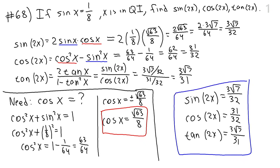To summarize problem 68: we wrote down the double angle identities for sine of 2x, cosine of 2x, and tangent of 2x. We knew sine of x but needed cosine of x. Using the identity cosine squared plus sine squared equals one, and recognizing that cosine must be positive in quadrant one, we found cosine of x. Then we plugged everything into the formulas to get our answers.